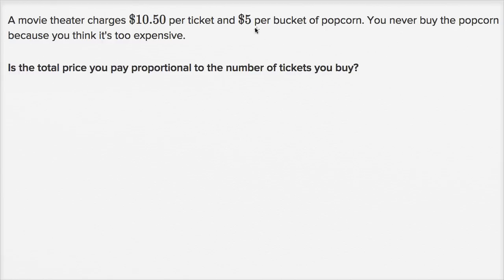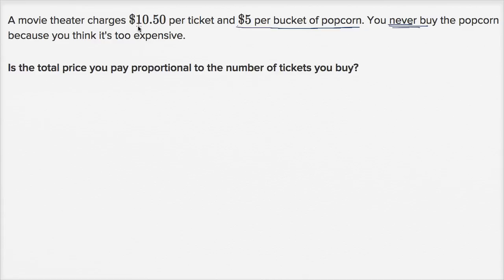This is interesting because they tell us the price of a bucket of popcorn, but then they tell us that we never buy the popcorn. So I guess I don't know why they even told us what the price is — maybe to confuse us. Is the total price you pay proportional to the number of tickets you buy? Well, you're only buying tickets, you're not gonna be buying any popcorn. So you're gonna spend $10.50 for every ticket, so it should be proportional.